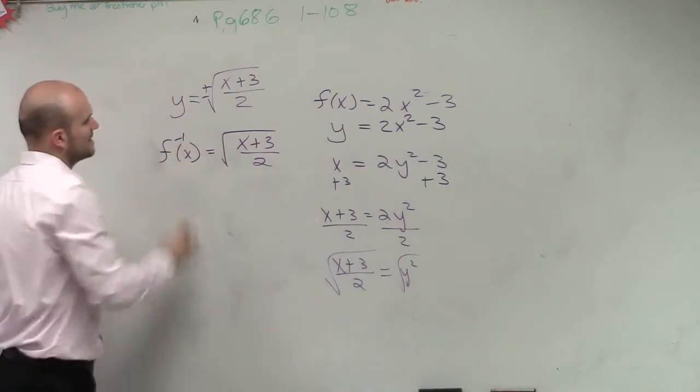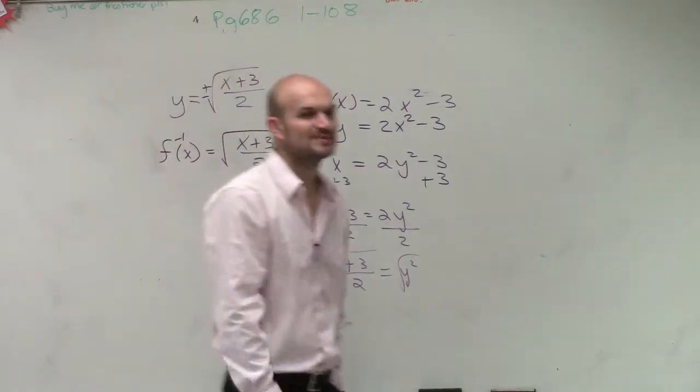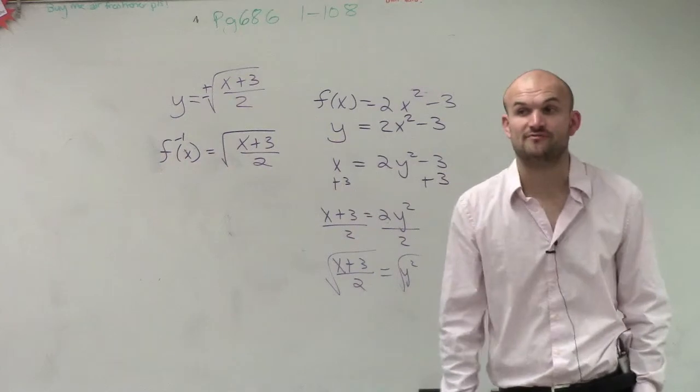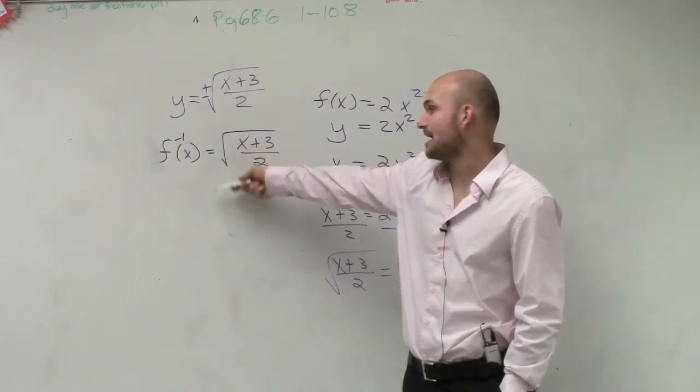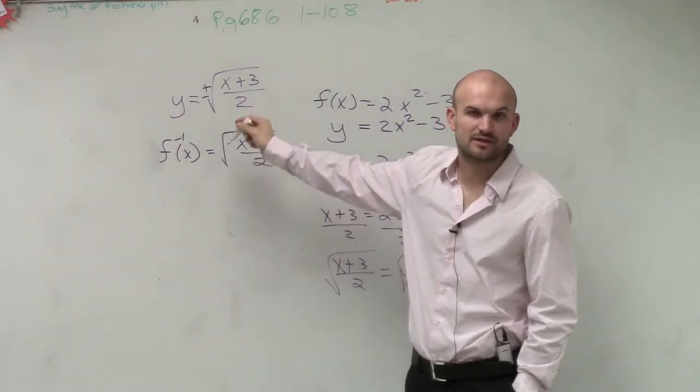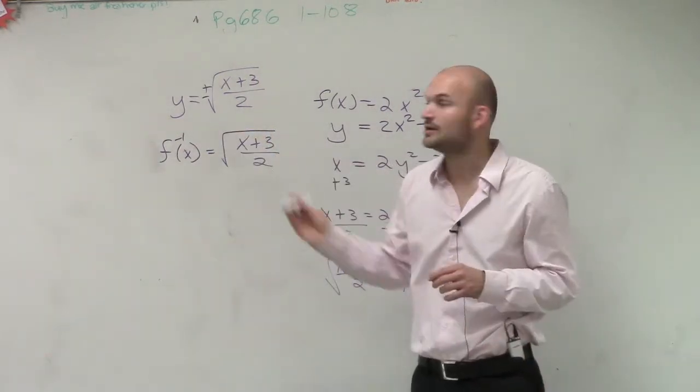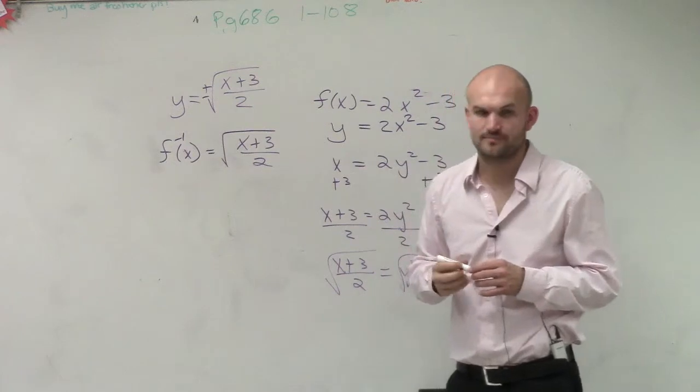And I can kind of show you guys why that'd be the case. But if we're going to represent a functional inverse, we have to make sure it's a function. If I include positive and negative, what I would have is not a function. So I want to make sure that my inverse is still going to represent a function. So I'll only use the positive value.